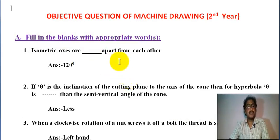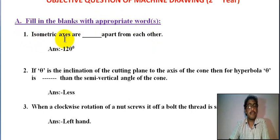Hello student, today we learn objective questions of machine drawing second year. This is part one. First, fill in the blanks with appropriate words. Number one: isometric axes are blank apart from each other.